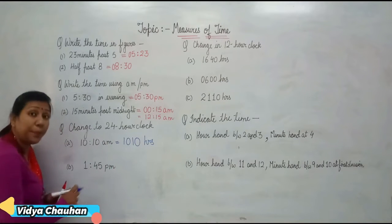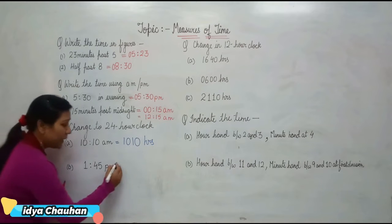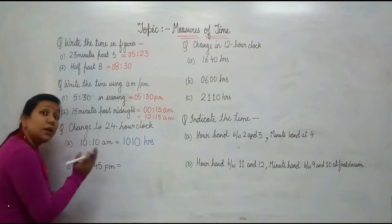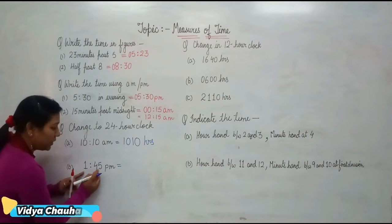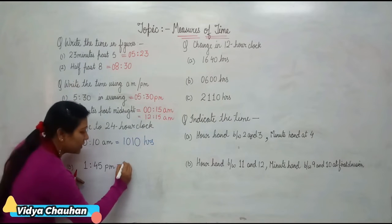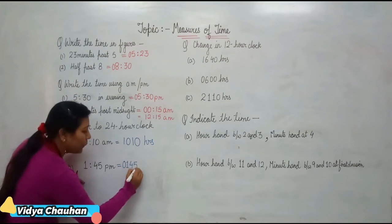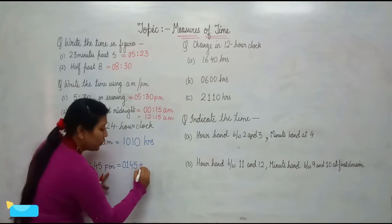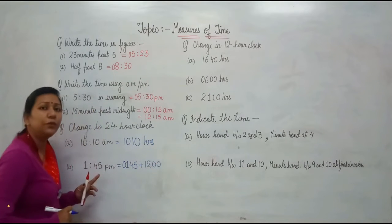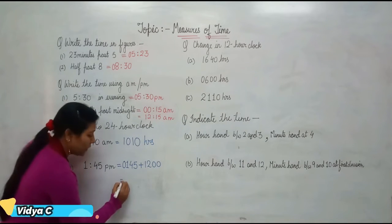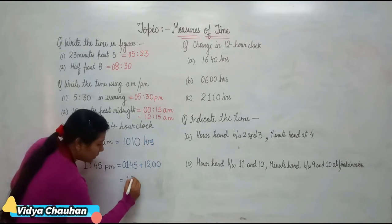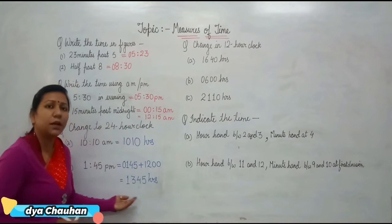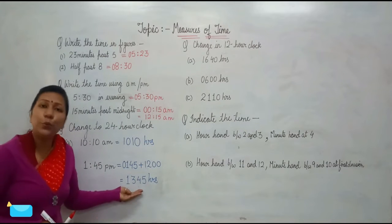Coming to the second part, in which it is PM. First, you write this time as a 4-digit value — since there are only 3 digits, you write 0145. This is your time in 12-hour clock. Just because it is PM, to convert to 24-hour clock we add 1200 to this. So 0145 plus 1200 gives you 1345 hours. That means 1345 hours — this is the conversion from 12-hour clock to 24-hour clock.